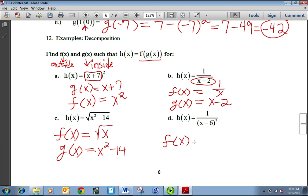With d, your inside function is going to be that x minus 6. It's inside the parentheses. And what's happening to it is we're taking the reciprocal and squaring it. So it's the reciprocal squared function that we talked about earlier in our library of functions.